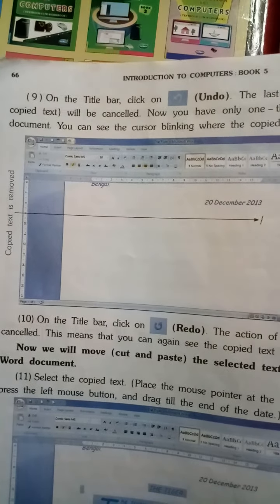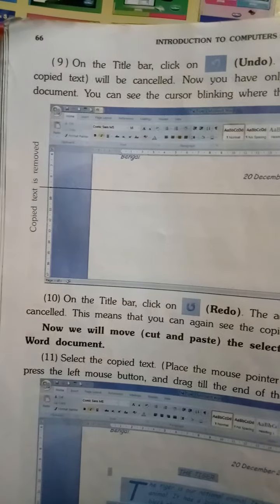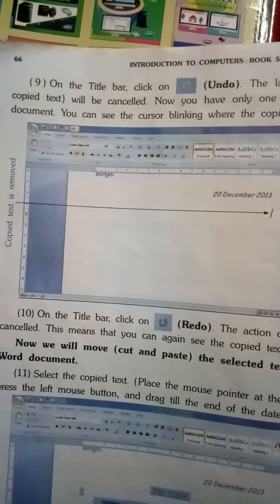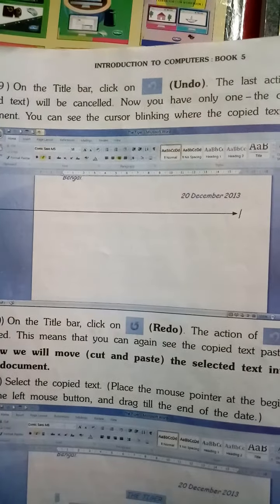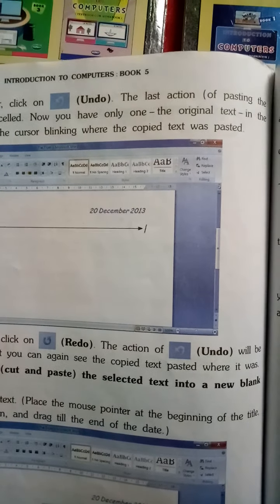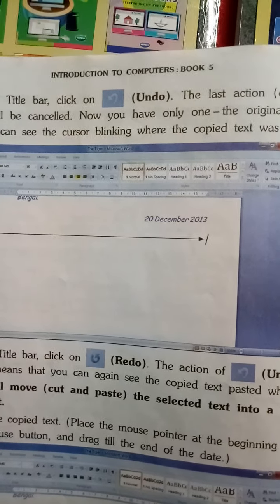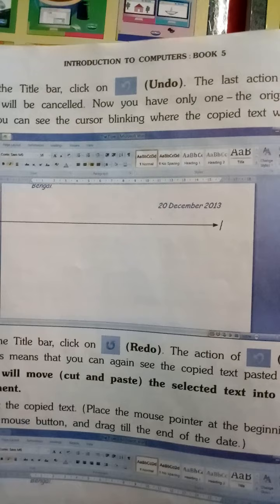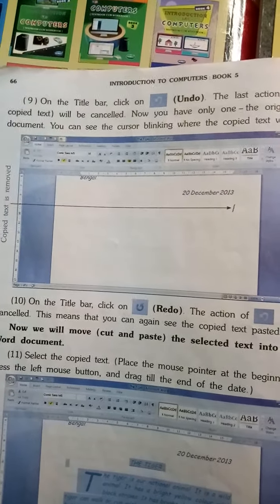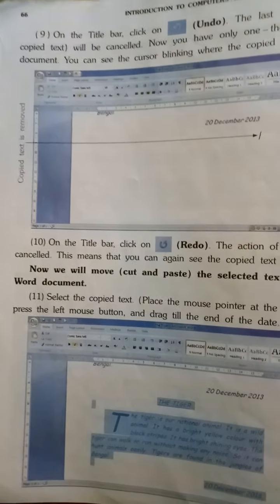On the title bar, click on Redo. The action of Undo will be cancelled. Redo के उपर click करेंगे तो Undo की action cancel हो जाएगी। This means you can again see the copied text pasted where it was — जो paste किया था copied text, वो वापिस आ जाएगा।